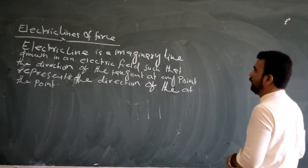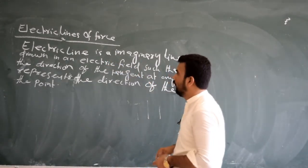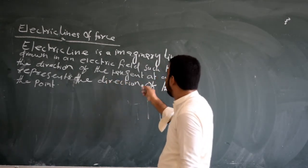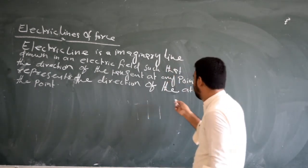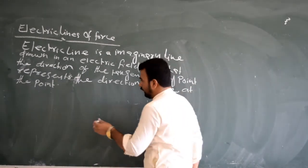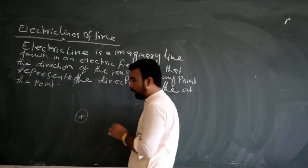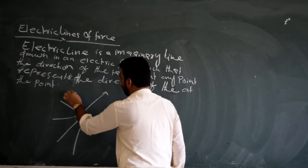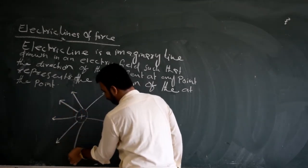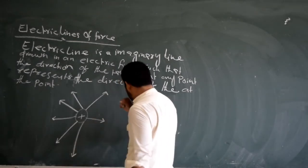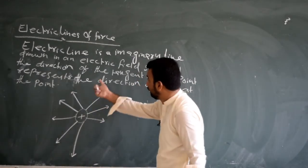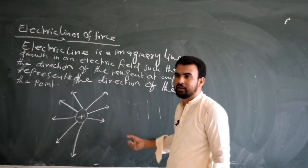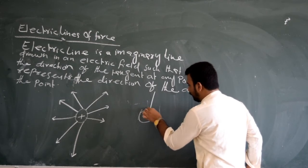Electric lines of force: an electric line of force is an imaginary line drawn in an electric field such that the direction of the tangent at any point represents the direction of the electric field at that point. Now this is a positive charge — the direction of its field lines is outward. This is the outward direction of its electric field lines, which is originated outward. When this is a negative charge, the direction is inward.